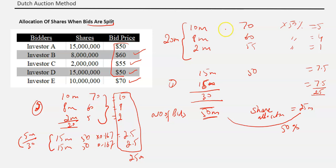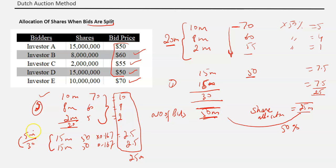To recap: in the Dutch auction method, bidding starts from the top share price and moves down. If up to 55 we collected 20 million, but at the 50 price there are 30 million in bids and we can only allocate 5 million — two methods apply. Method one: compare total bids (50 million) to shares wanted (25 million); everyone gets 50 percent. Method two — more common: divide the remaining allocated shares (5 million) by the total bids at the last price (30 million), giving each a 0.167 proportional quota.